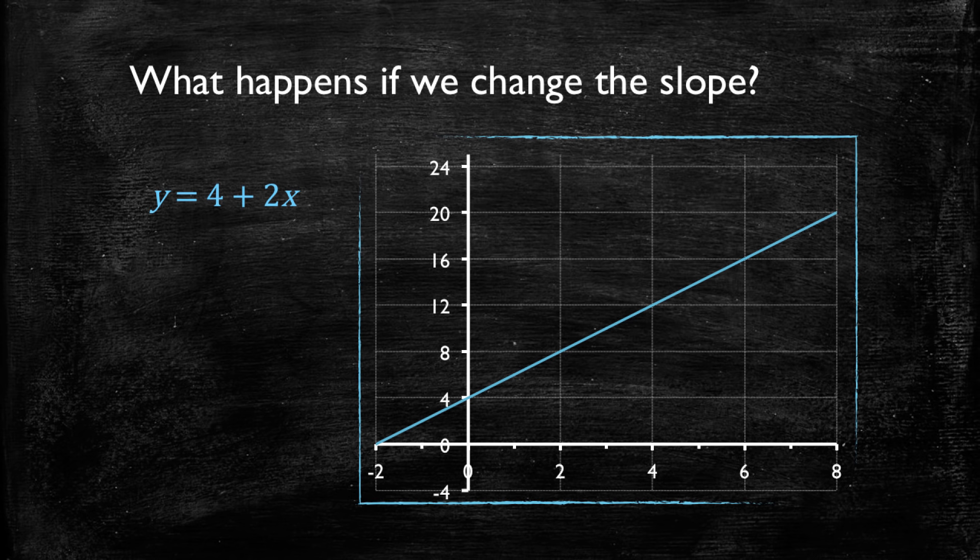If the slope were a five, that means for every unit of x, y is going to increase five times. So you see that we have a much steeper slope because y is growing much faster than it was before when we had a two.